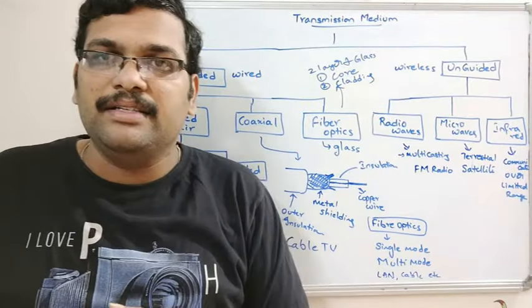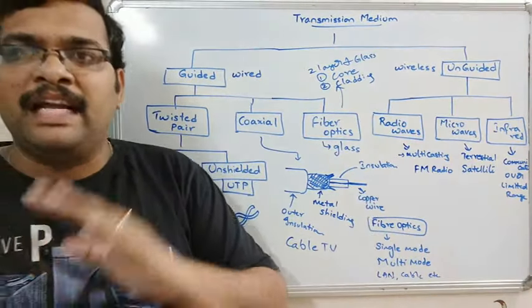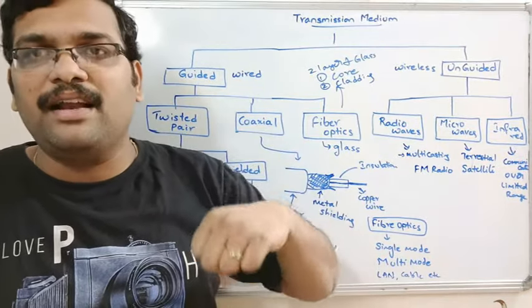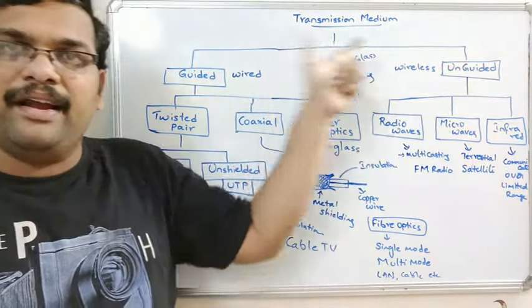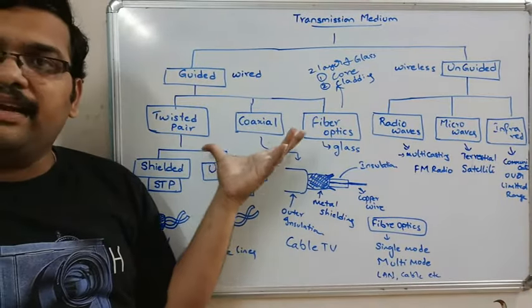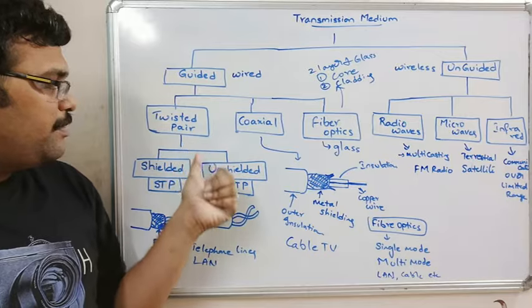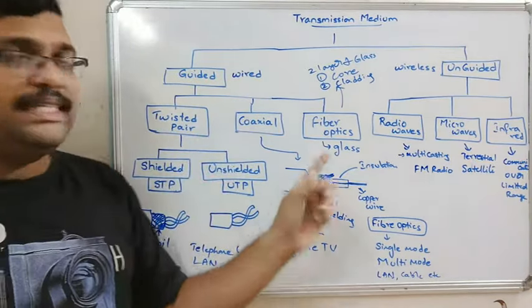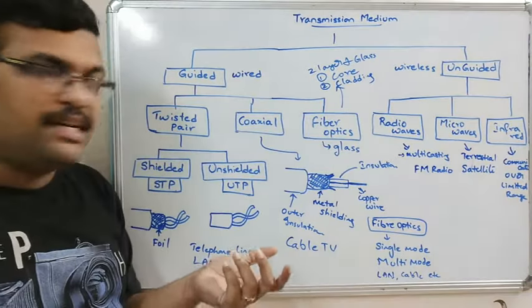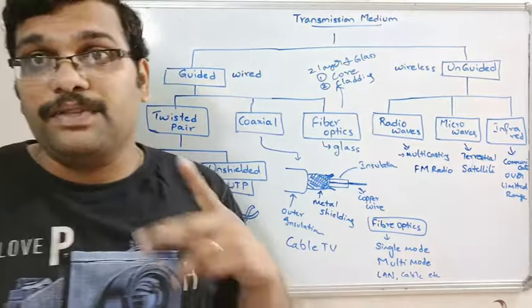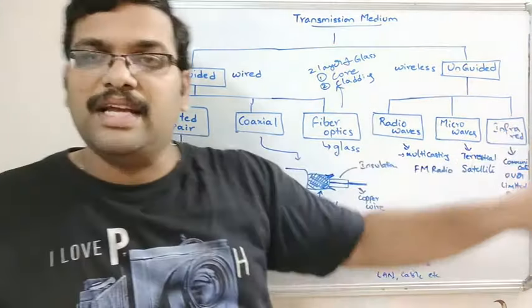The receiver directly receives infrared signals, microwaves, or radio waves. Through one of these transmission media, raw bits are transferred from one system to another in the physical layer. To summarize: guided media includes twisted pair, coaxial, and fiber optics — each aiming to reduce noise and crosstalk. Unguided media includes radio waves, microwaves, and infrared rays.